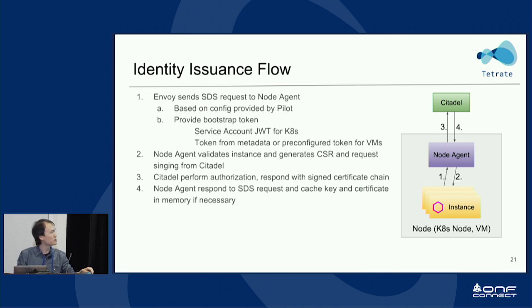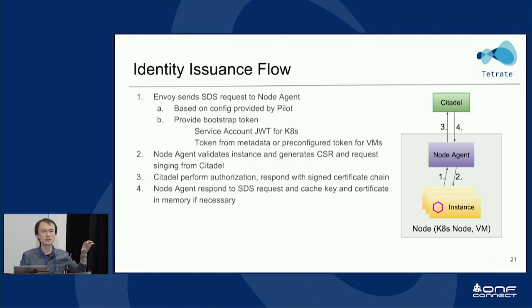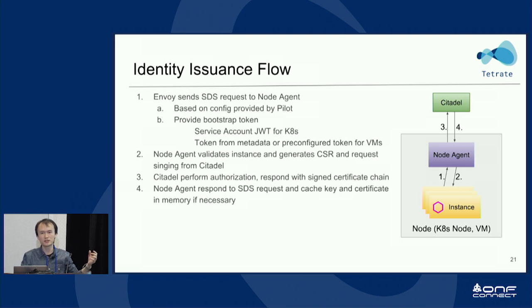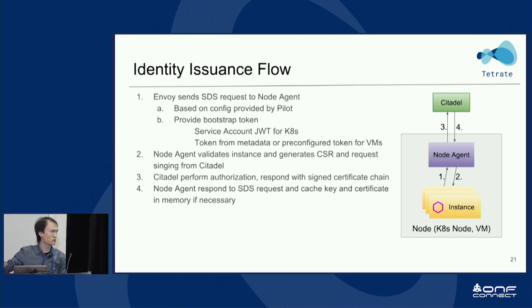The node agent generates a private key and sends a certificate signing request to Citadel, requesting the signing part. Citadel is a pluggable component — it can have another backend like public CAs or an in-house root CA, and that is opaque to the node agent. The node agent sends the CSR to Citadel, and if all authorization passes, Citadel sends back the signed certificate and the whole certificate chain up to the root CA. The node agent then delivers that to the sidecar proxy.